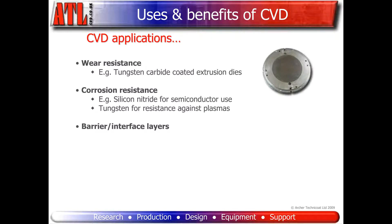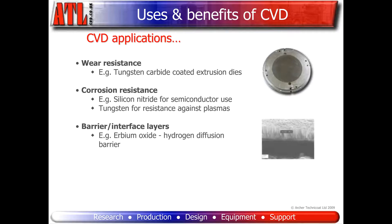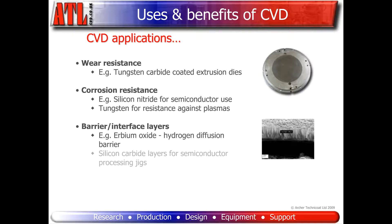Interface layers, to prevent movement of a material through the layer to prevent contamination, or to coat a component to help it bond to another material. An example of a barrier layer would be erbium oxide, acting as a hydrogen diffusion barrier layer. Silicon carbide coating of wafer jigging in semiconductor processing.